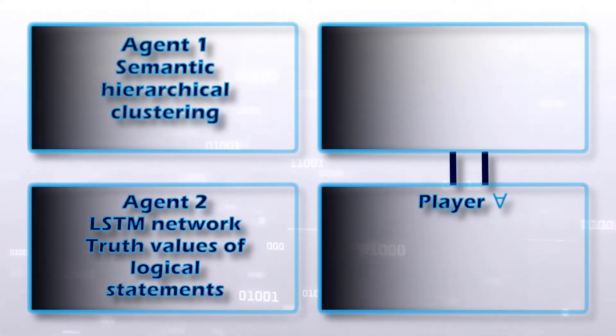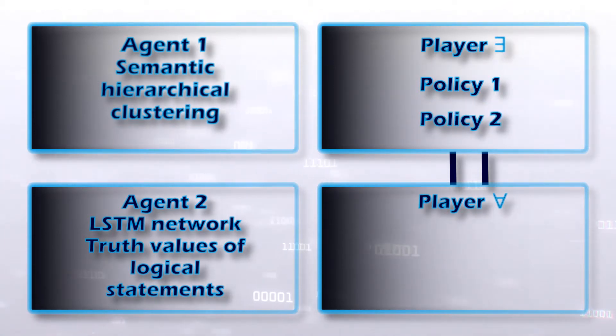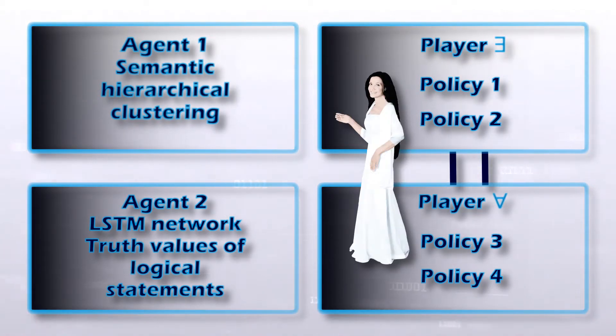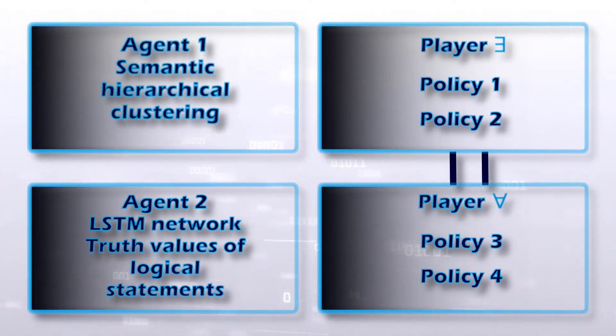In the context of the semantic game with imperfect information, the player associated with the existential operator wins if it chooses similar numbers in the logical operator in the right place, and otherwise the player associated with the universal operator wins. The logical and the semantic agent develop two policies. In other words, there are four policies.